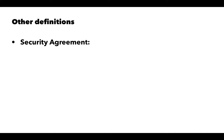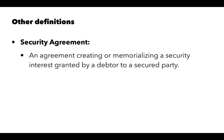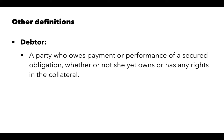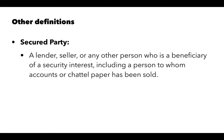There are some other definitions we need to review. A security agreement is an agreement that creates or memorializes the security interest granted by a debtor to a secured party. In exchange for the extension of credit from the creditor to the debtor, the debtor gives the creditor a document that memorializes a security interest in certain property. A debtor is the party who owes payment or performance of a secured obligation, whether or not she yet owns or has any rights in the collateral. A secured party — the creditor — is a lender, seller, or any other person who is a beneficiary of a security interest, including a person to whom accounts are sold.